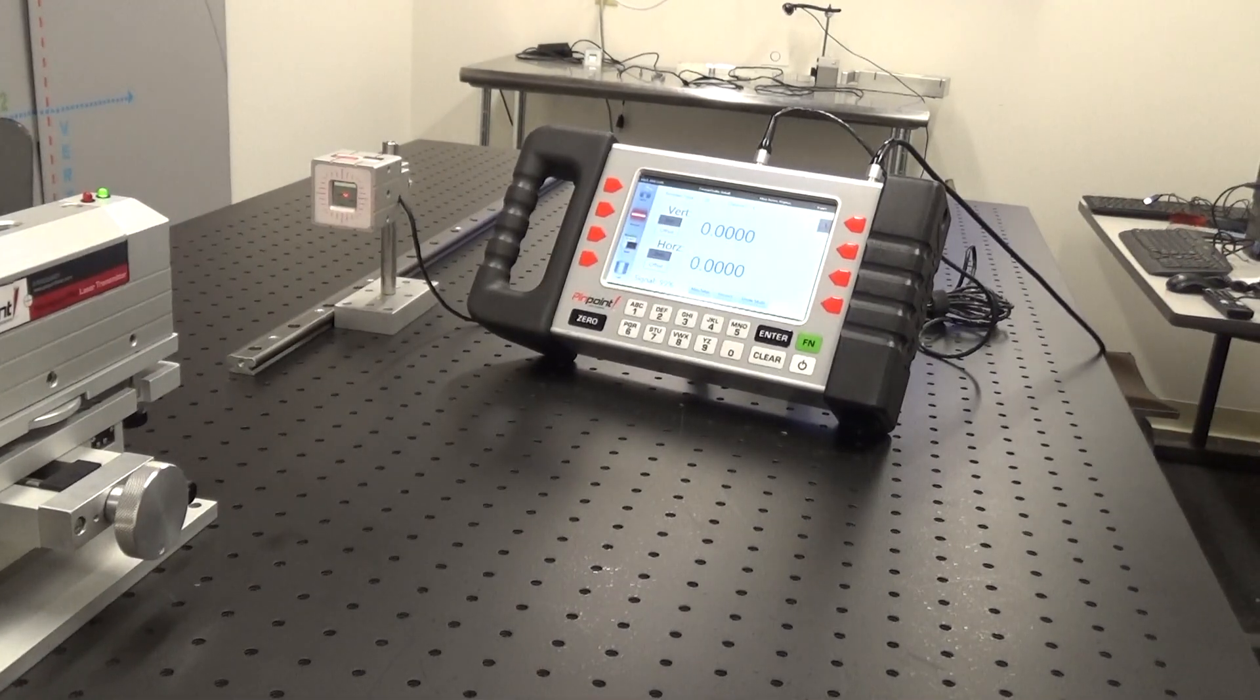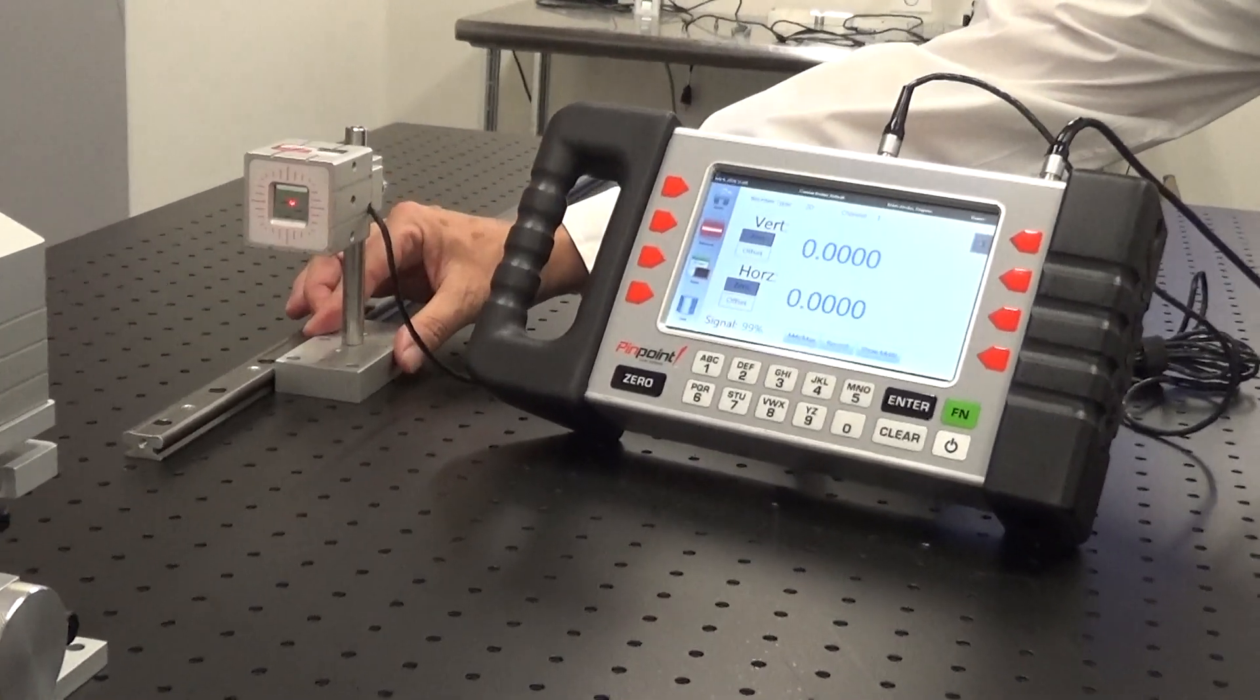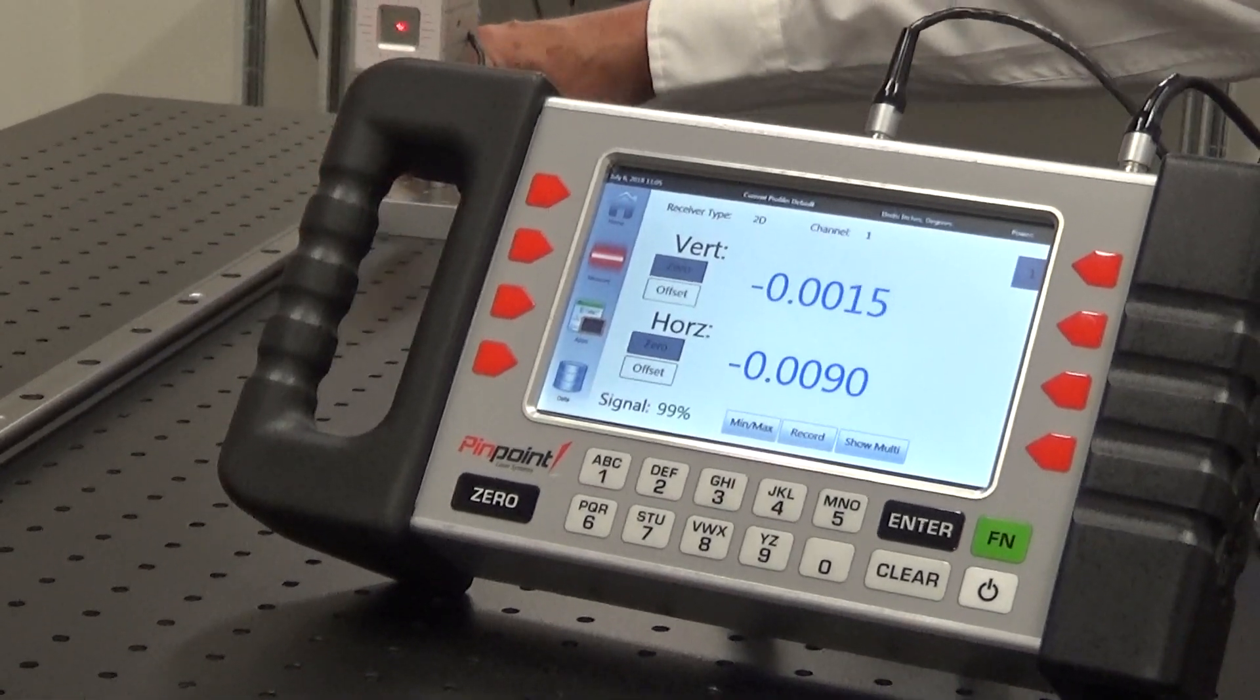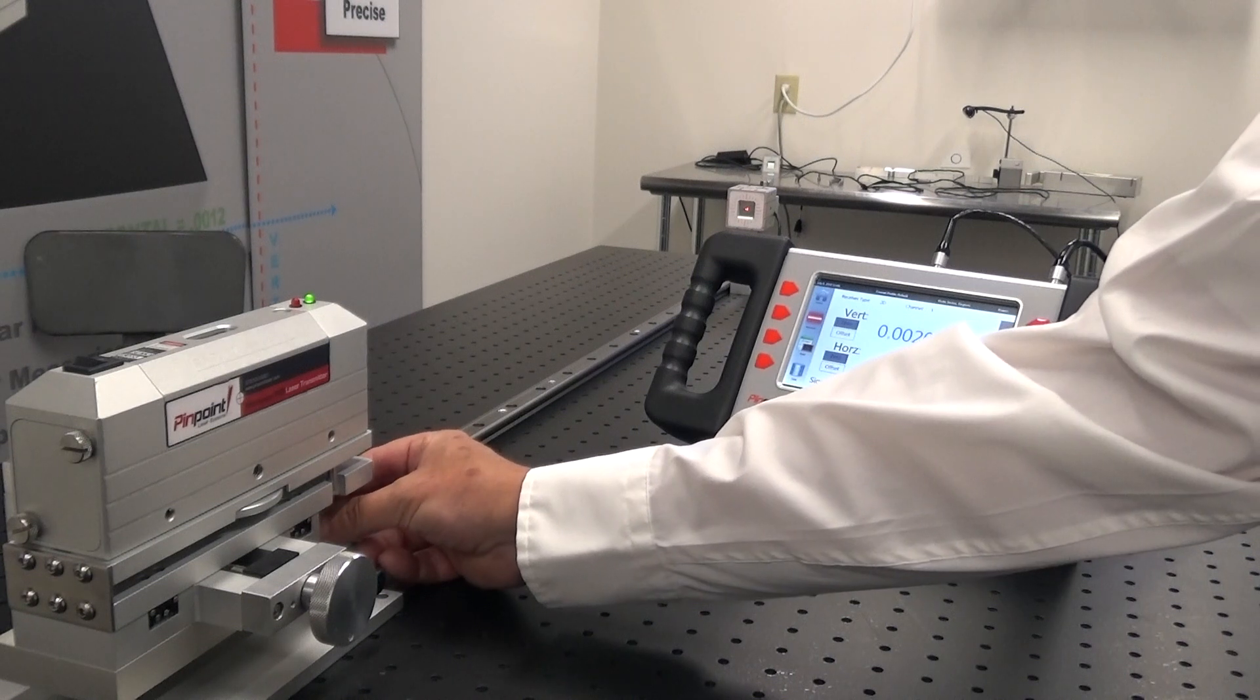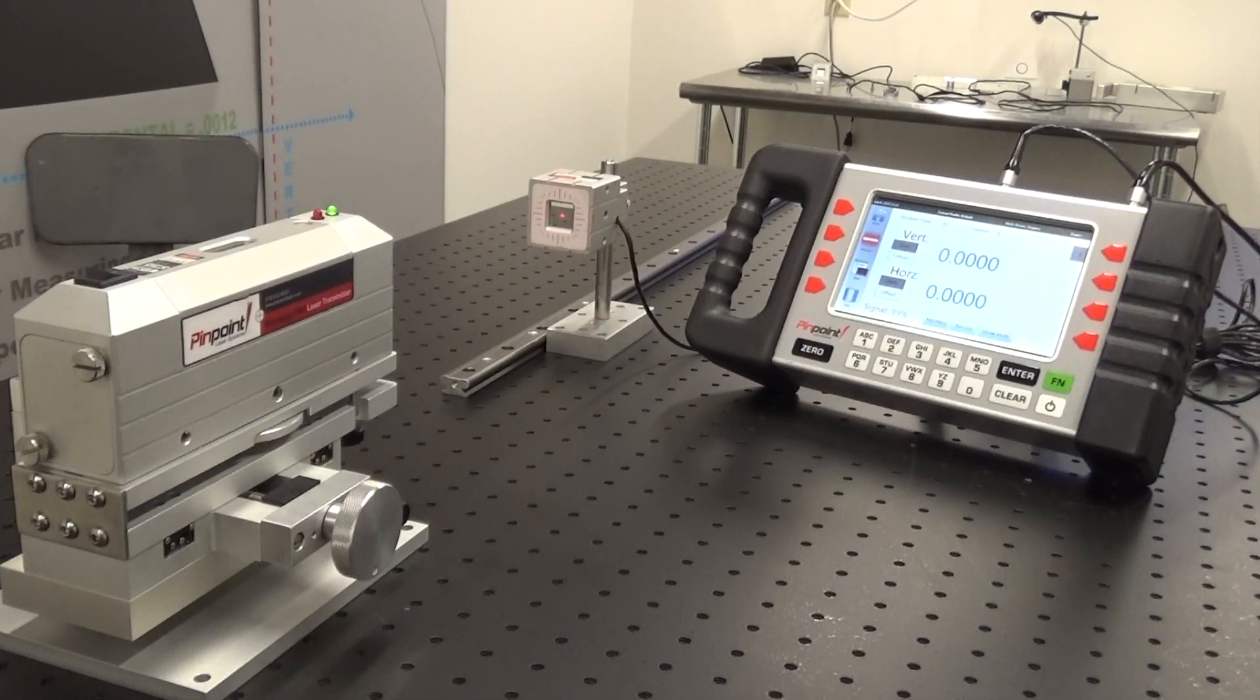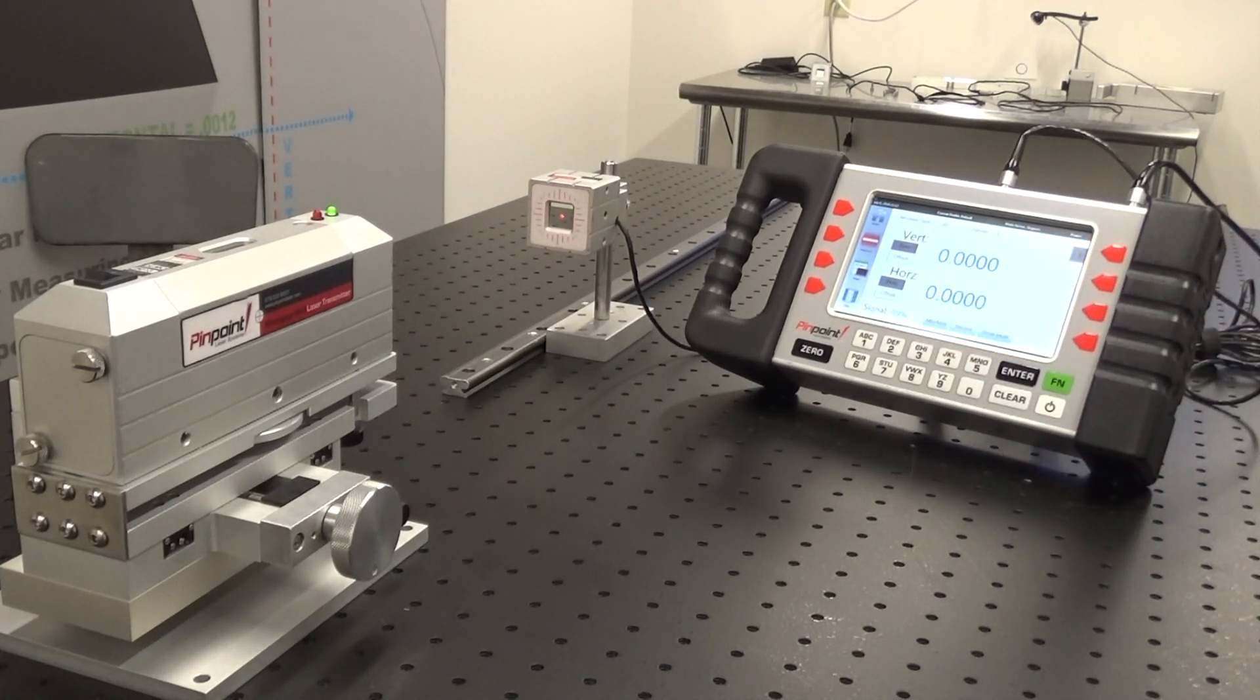We have set distance or reading number one at zero. We will slide the receiver back to distance or reading number two. And we will adjust that to zero also. Now that we have both positions at as close to zero, we are ready to evaluate the straightness of the rail.